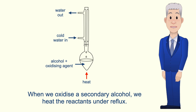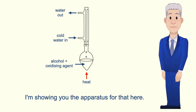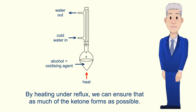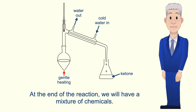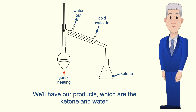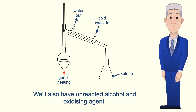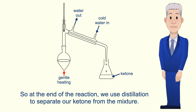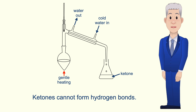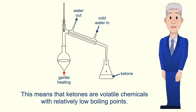When we oxidize a secondary alcohol we heat the reactants under reflux — the apparatus for that is shown here. By heating under reflux we can ensure that as much of the ketone forms as possible. At the end of the reaction we will have a mixture: our products which are the ketone and water, as well as unreacted alcohol and oxidizing agent. So we use distillation to separate our ketone from the mixture. Ketones cannot form hydrogen bonds, which means they are volatile chemicals with relatively low boiling points.